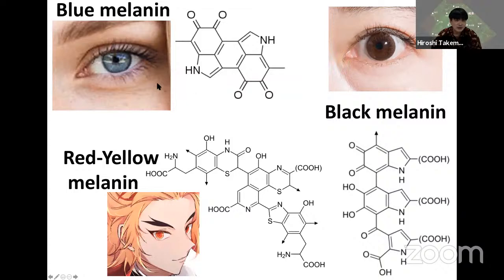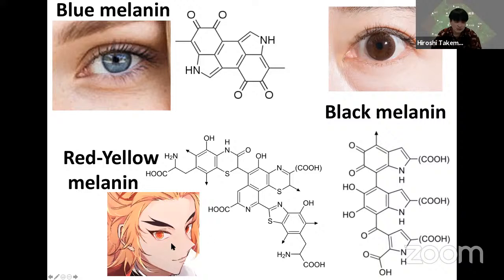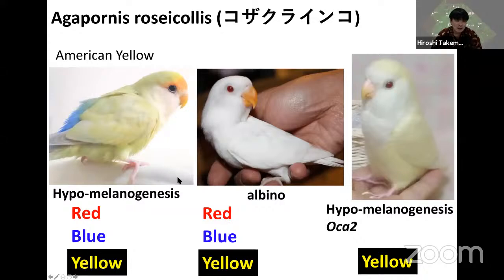Blue melanin is also relevant in humans. European people have blue melanin in the iris — it has a very simple structure and low content. In contrast, Asian people have black melanin in the iris, which has a large conjugated dopaquinone structure. Pheomelanin — red or yellow — also forms conjugations. Hair color is determined not only by the combination of melanin types but also by melanin content.